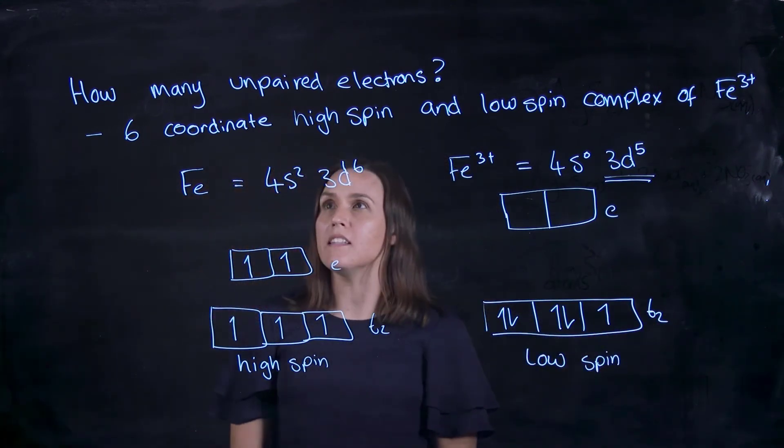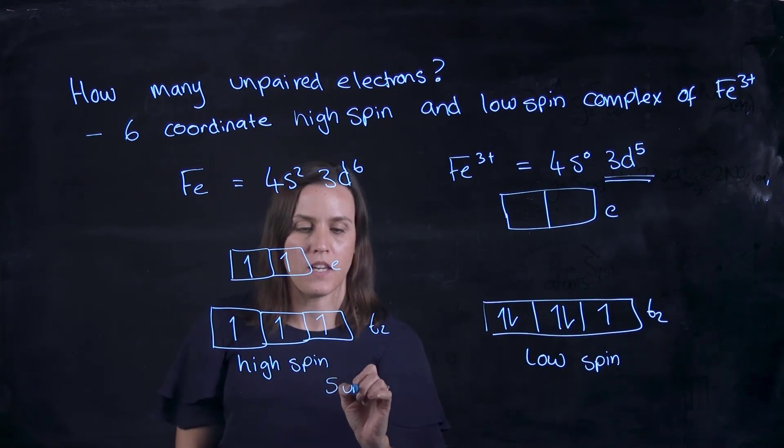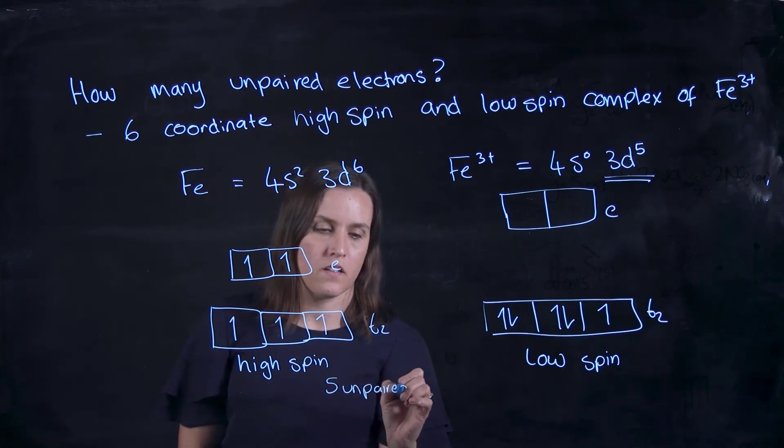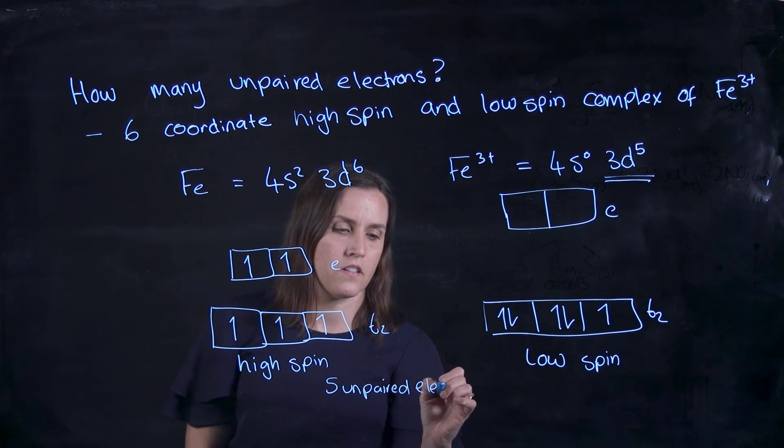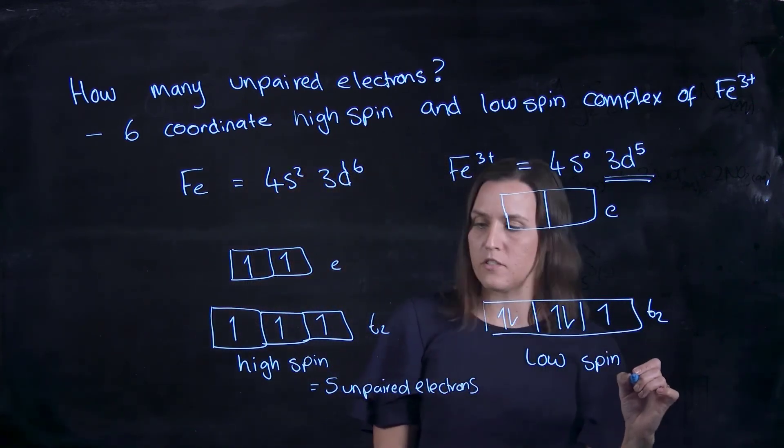So then to go back and answer how many unpaired electrons. In my high spin, I have 1, 2, 3, 4, 5 unpaired electrons. And in my low spin, I've got 1 unpaired electron.